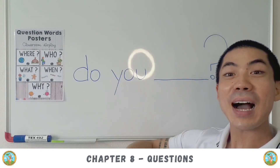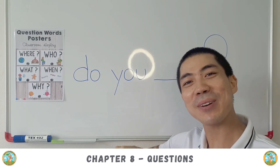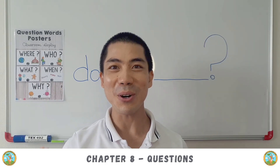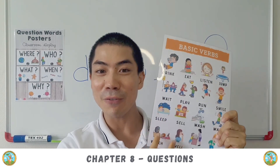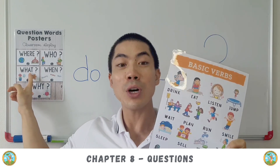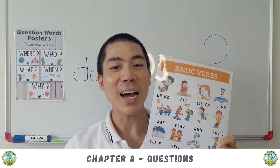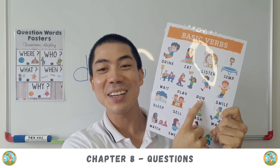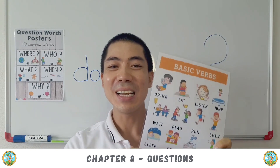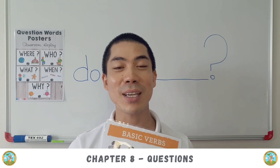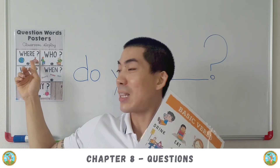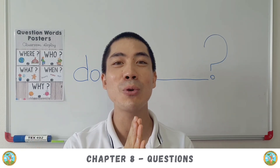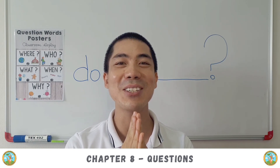Now please try to make your own sentences using any of the verbs we learned. You can ask: what do you eat? I eat ice cream. Where do you run? I run at the park. Try to ask your friends, parents, and teachers questions using these five question words. After you have practiced, I will see you in the next class where we will do the worksheets. Thank you, have fun, and bye bye!